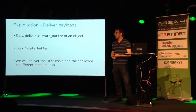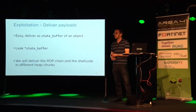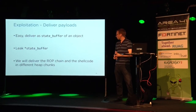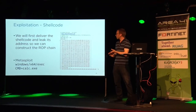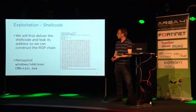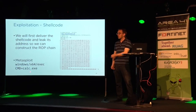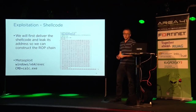Exploit delivery is quite easy in this example — we just use the state buffer and leak its address. For this inventory example, we created the shellcode with Metasploit using the Windows exec shellcode which pops a calculator. This is standard generated code. The ROP chain is also pretty straightforward.